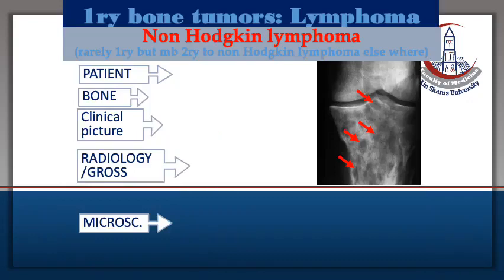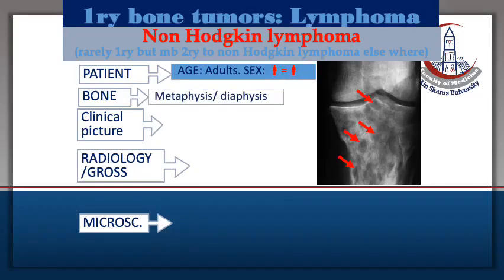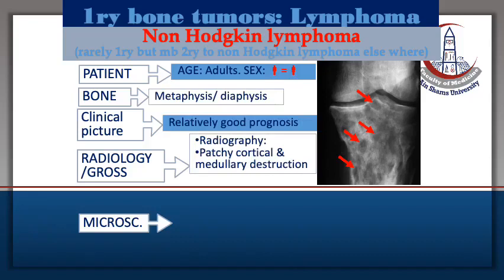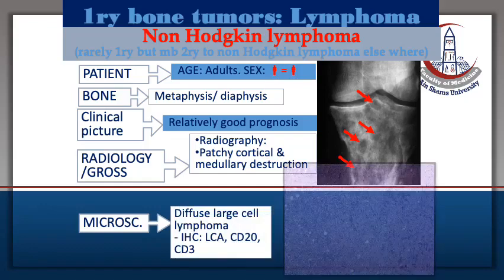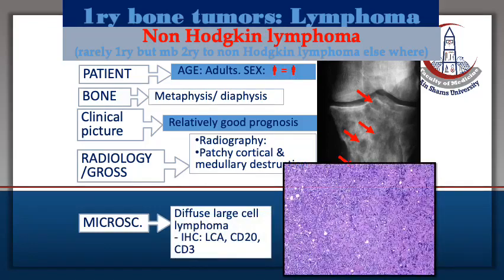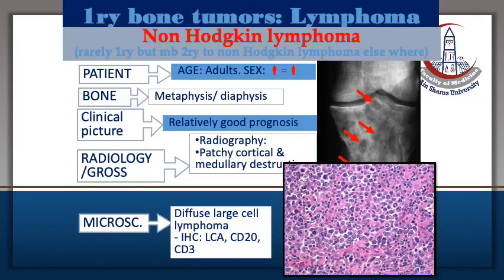The second bone tumor we will discuss is lymphoma. It is a non-Hodgkin type that occurs in adults, either in the metaphysis or diaphysis. It has a good prognosis. It produces multiple lytic lesions and under the microscope it is formed of malignant lymphocytes staining positive with either CD20 or CD3.